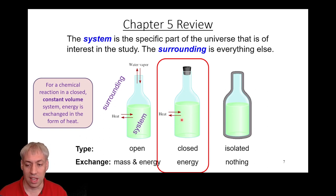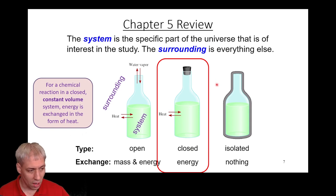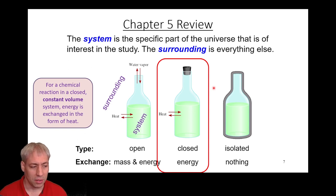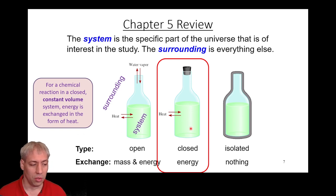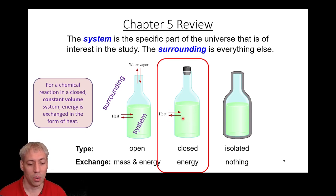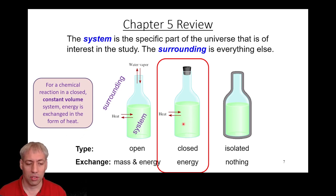The system we talk about most in thermodynamics is the closed system, where all our bookkeeping involves heat going in and out — we're not releasing or adding matter. The closed bottle is the system; everything around it is the surroundings. Another simplification in chapter 16 is that we talk about constant volume: the definition of energy is work plus heat, but we assume we're not changing the volume, so no energy goes to work — all energy is exchanged as heat.